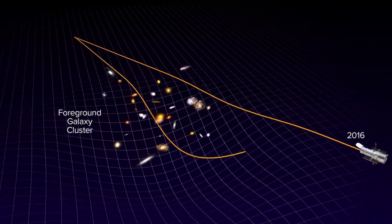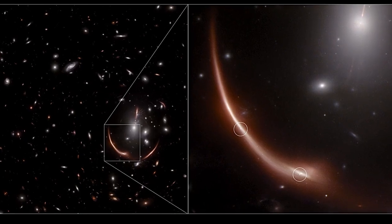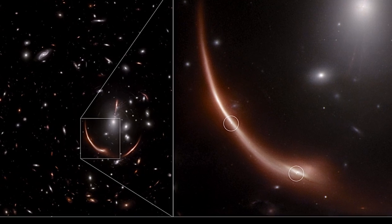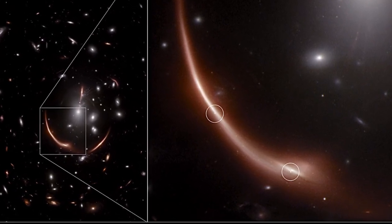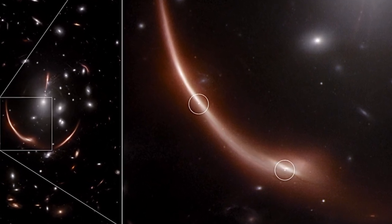Astronomers had previously revealed a surprising discovery in 2019: a stellar explosion, or supernova, within MRG-M0138 captured by NASA's Hubble Space Telescope in 2016. Upon scrutinizing the 2023 images from the Webb Telescope, another group of astronomers made an astonishing revelation — seven years later, the same galaxy hosted a second supernova.